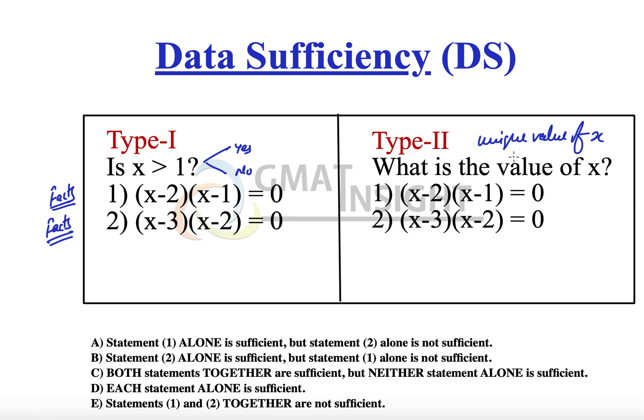Unique value means there should be only one value. More than one possible value of x means the information is not sufficient. It's like if somebody asks your name and you say 'my name is Adam, and some people call me Bernie as well' — the listener is confused because your name could still be either Adam or Bernie. So unique value of x means there should be only one value; only then we consider the statement sufficient. Statements are facts — we don't judge them, we use them to answer the question.